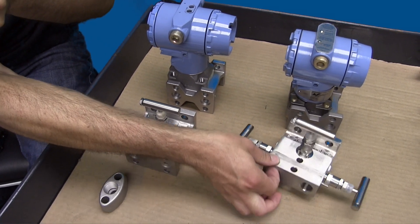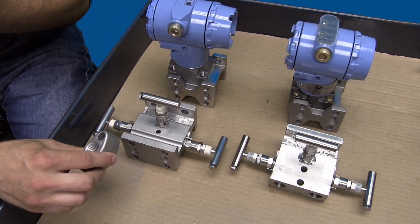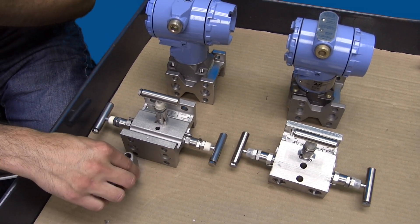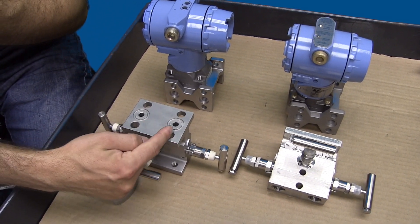The process connection styles include half-inch NPT and football connections, also called process adapters. The instrument side has a two-and-a-half inch center-to-center connection.